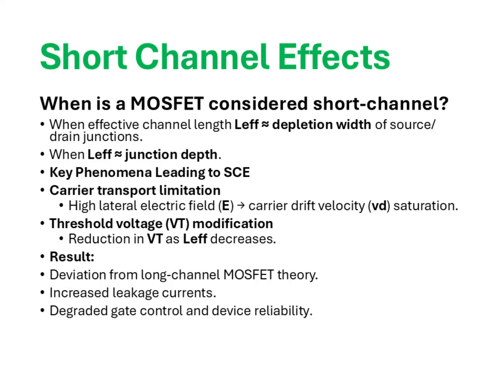The two dominant phenomena driving SCE are carrier transport limitation and threshold voltage modification. Under short channel conditions, the electric field along the channel becomes very strong — a high lateral E-field builds up between source and drain. This causes the carrier drift velocity VD to approach saturation rather than increasing linearly with field strength, which directly affects current drive capability. The second effect, often more critical, is the variation of threshold voltage VT. As the channel length shrinks, the influence of source and drain depletion regions on the channel potential increases, effectively lowering the threshold voltage, meaning the device can turn on more easily, but at the cost of increased sub-threshold leakage currents.